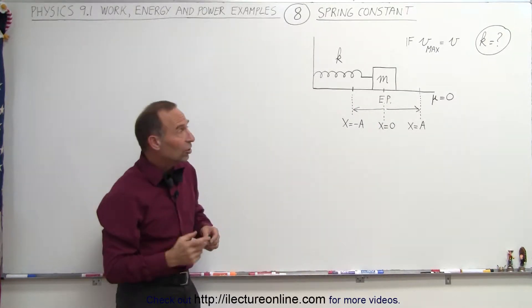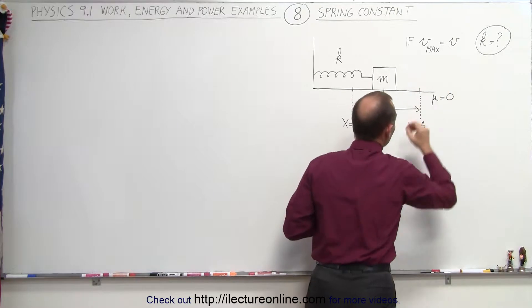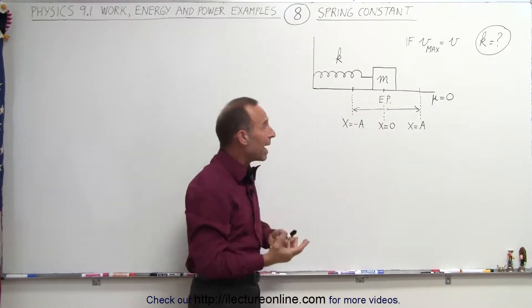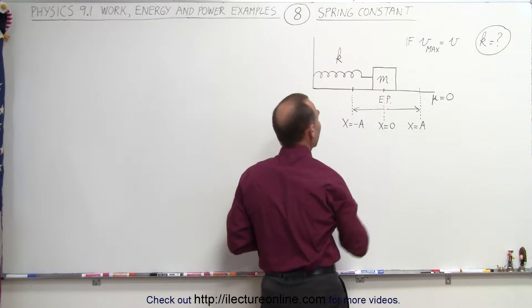Now the question is, if v max is equal to v, so let's say v represents v max, then what will the spring constant k be?